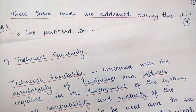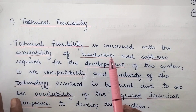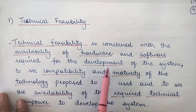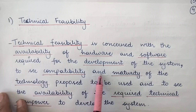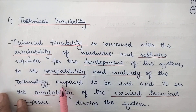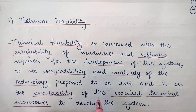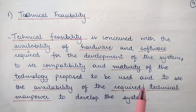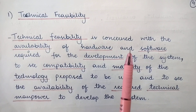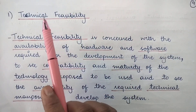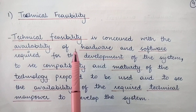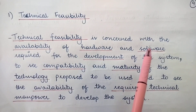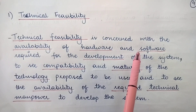Let us start with technical feasibility. Technical feasibility is concerned with the availability of hardware and software required for the development of the system, to see the compatibility and maturity of the technology proposed to be used, and to see the availability of the required technical manpower to develop the system. Basically, technical feasibility checks the feasibility of technical things — the hardware and software required for developing the information system.